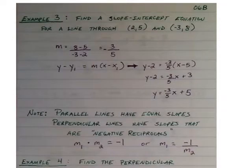Alright, we're getting into example 3 here, which is a more realistic example of how it will be on the skill test. It says find a slope-intercept equation for a line through (2, 5) and (-3, 8).